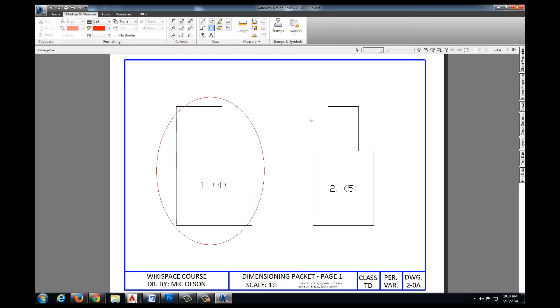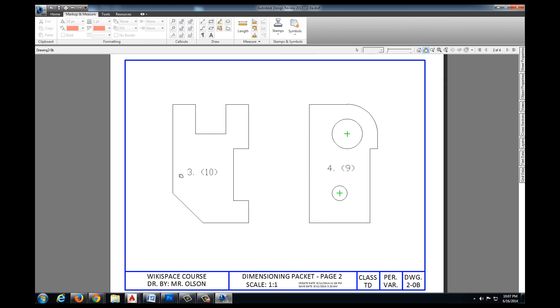As you progress through all of the different drawings, keep in mind the number of dimensions that should go on each part. This particular one for number two has five dimensions. If we move forward to another page this one has ten dimensions, and this one has nine dimensions.